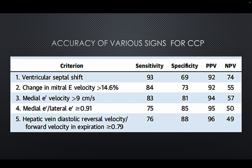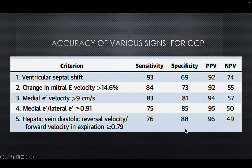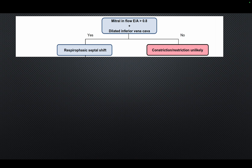These are the various parameters and their sensitivity and specificity. In this patient, ventricular septal shift had a sensitivity of 93%, and the most specific finding was hepatic venous flow with a specificity of 88%. This patient had a good number of positive signs.